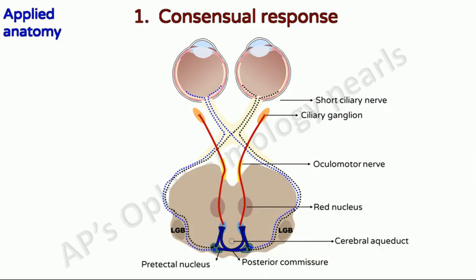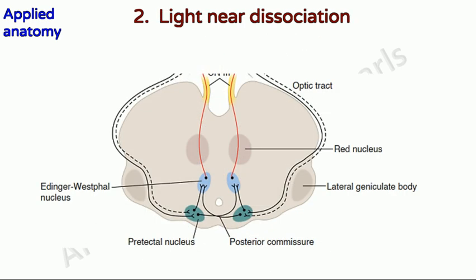Coming to the applied anatomy: the consensual response is due to double decussation in the pupillary light reflex pathway — one at the level of the chiasm and the other at the level of the pre-tectal region of the midbrain. Some excitatory pathways from the occipital area to the oculomotor complex, which facilitate pupillary constriction for near stimuli, are situated more ventrolaterally than the light reflex pathways. Hence, lesions of the pre-tectal and Edinger-Westphal nuclei, or the decussating fibers of the pre-tectal nucleus in the posterior commissure, do not affect these near-response pathways.